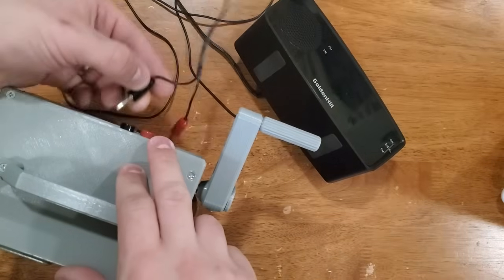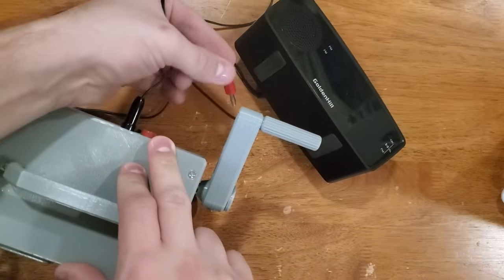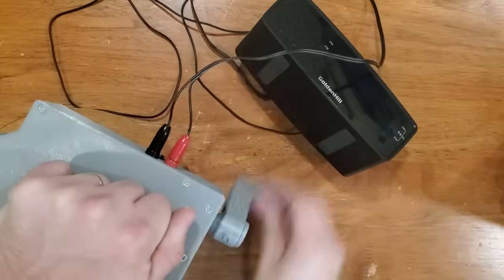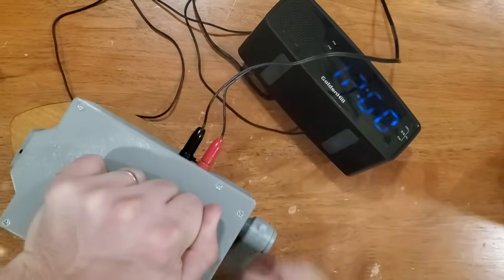For the last test, I hooked up this little alarm clock that has an FM radio in it. It's meant to run at 5 volts, but I found it could work reliably as low as 3 volts. At a full charge, the generator will run the radio for about 4 minutes.